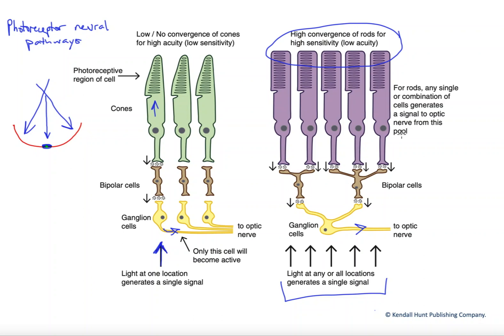However, because the information is pooled under this smaller and smaller number of cells as we exit the retina via the ganglion cells, we have very high light sensitivity, meaning that the rods work very well in low light levels.